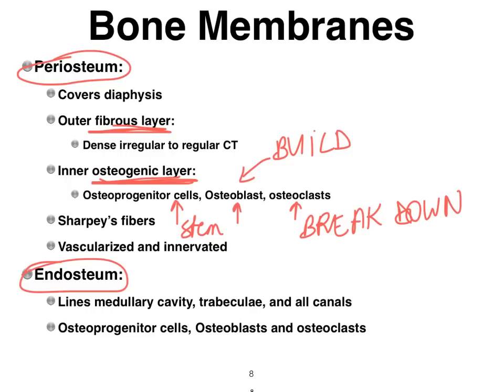The endosteum is found lining the medullary cavity as well as all the other holes and canals in bone — the trabeculae are in spongy bone tissue. The endosteum is similar to the inner osteogenic layer of the periosteum: it's made up of the same bone cells we just listed, just not very organized — sort of a bunch of cells sitting around, maybe some fibers, but primarily just cells.